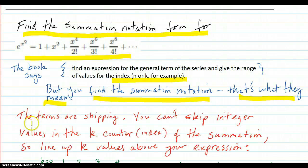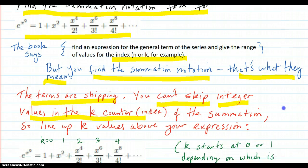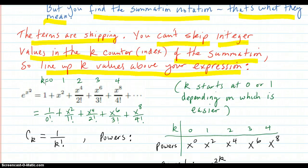Notice the terms are skipping. There's no x term, there's no x to the third. You cannot skip the integer values in the k counter or the index of the summation. So you line up your k values above your expression. Here it is. Here's your k: 0, 1, 2, 3, 4. Here's your expression.